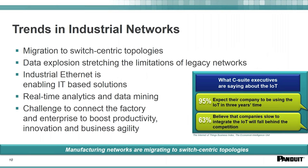This is becoming a real big trend in industrial networks, and there are other trends taking place to support this. One is the migration from a switch-centric topology, moving away from a controller or PLC-type central topology. We have a lot more data being put onto these networks, stretching the limitations of legacy networks. We're moving to more of a standard base, and industrial Ethernet is enabling IT solutions to now be used on the plant floor, providing real-time analytics.